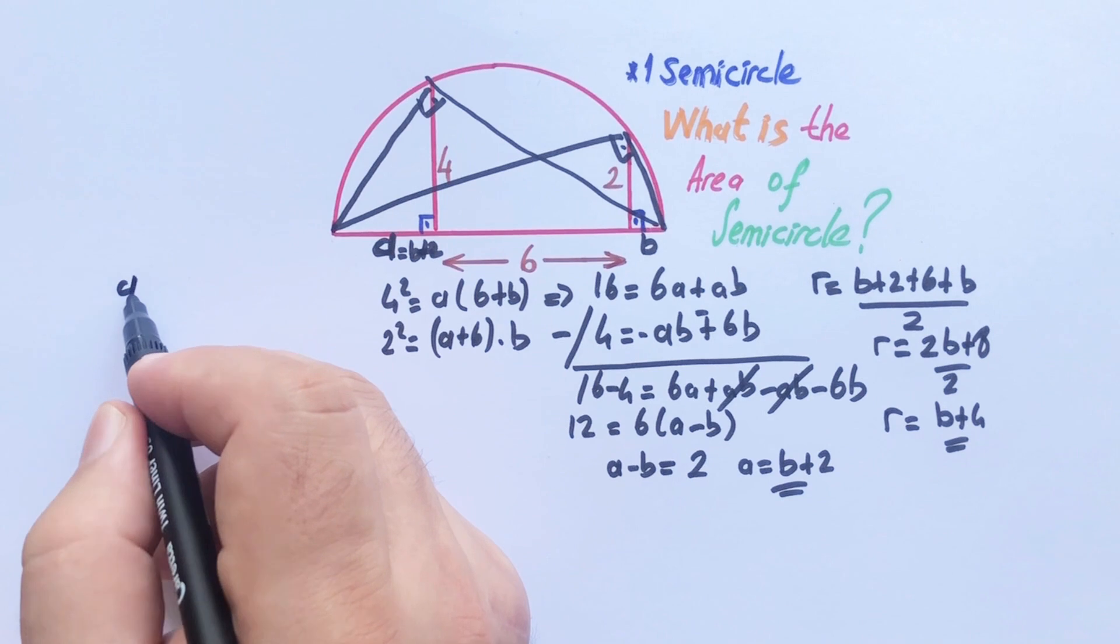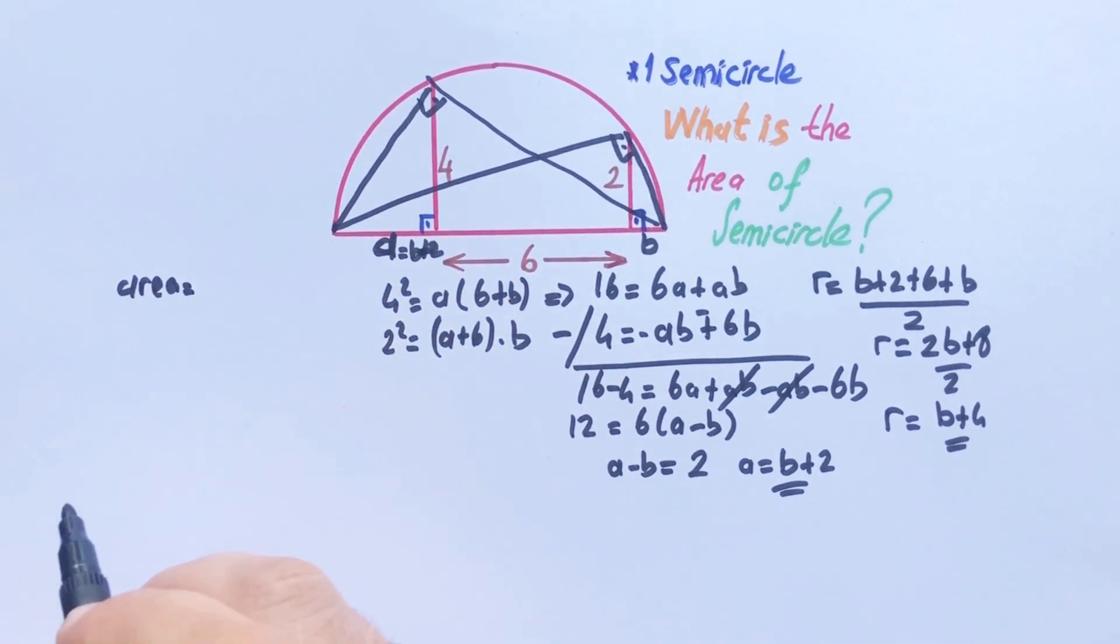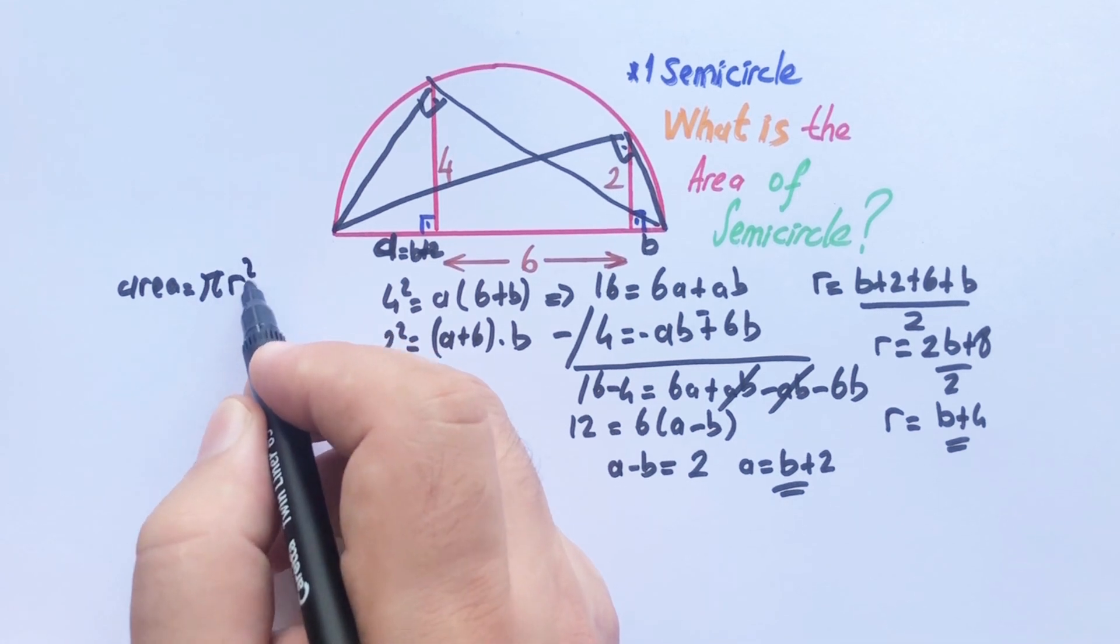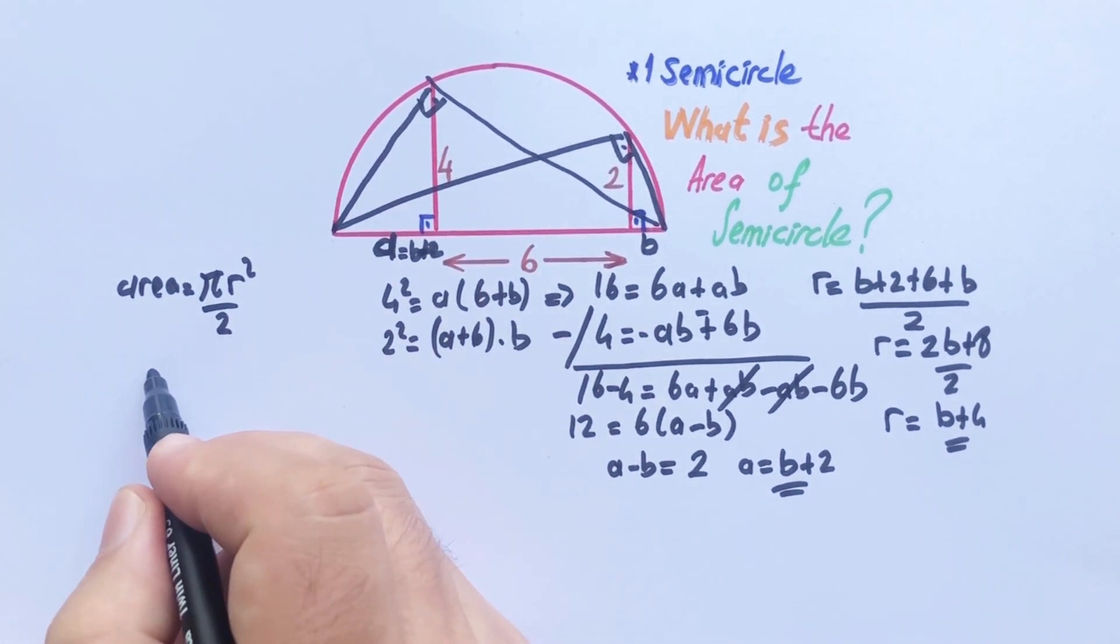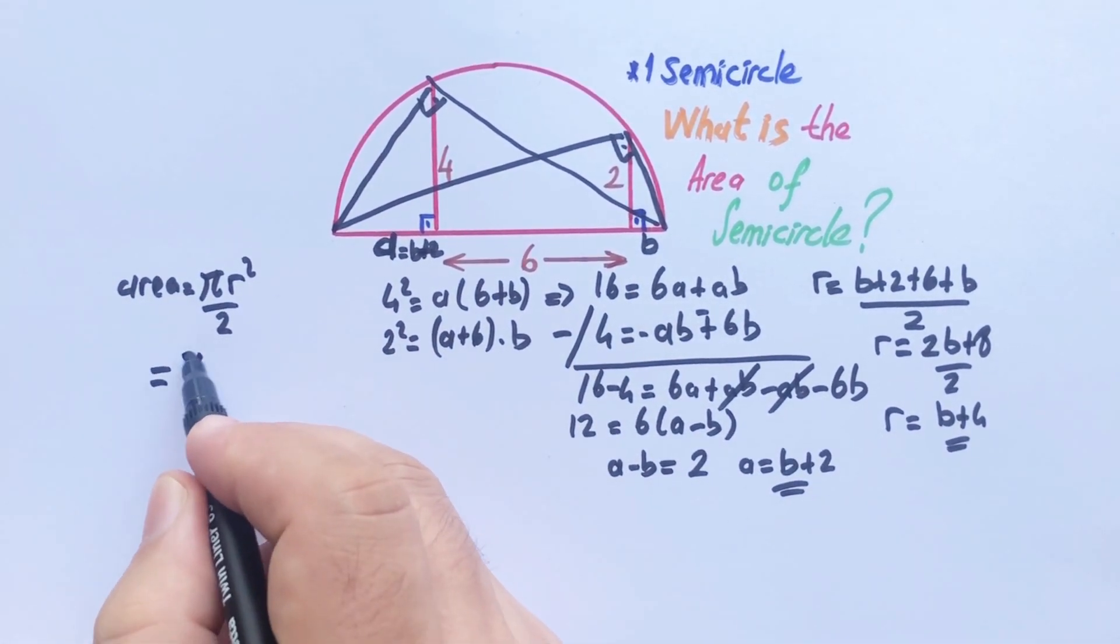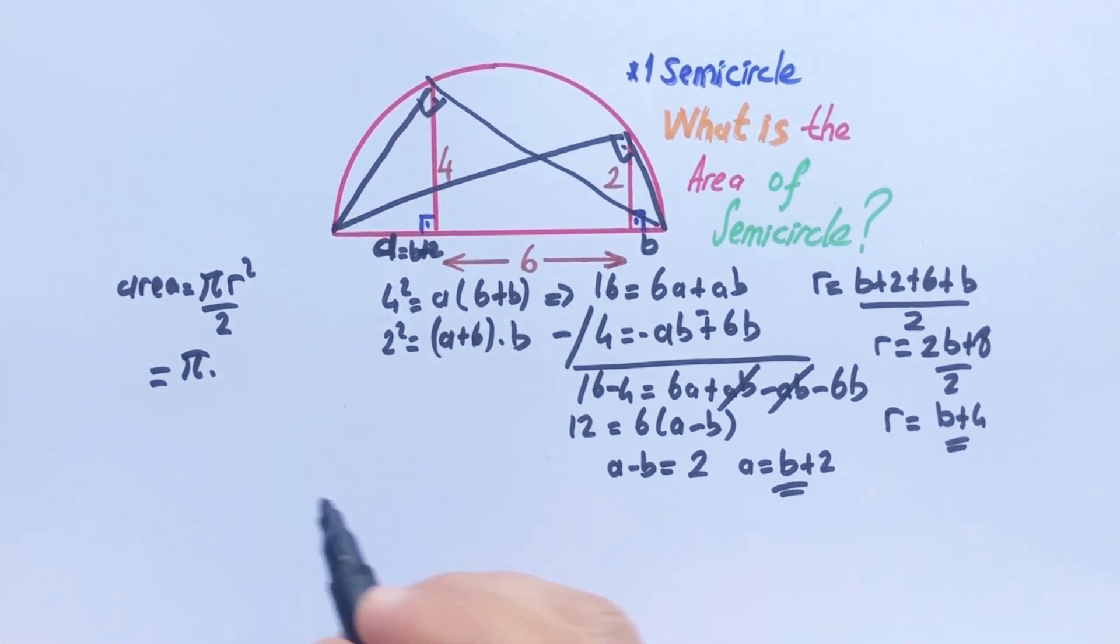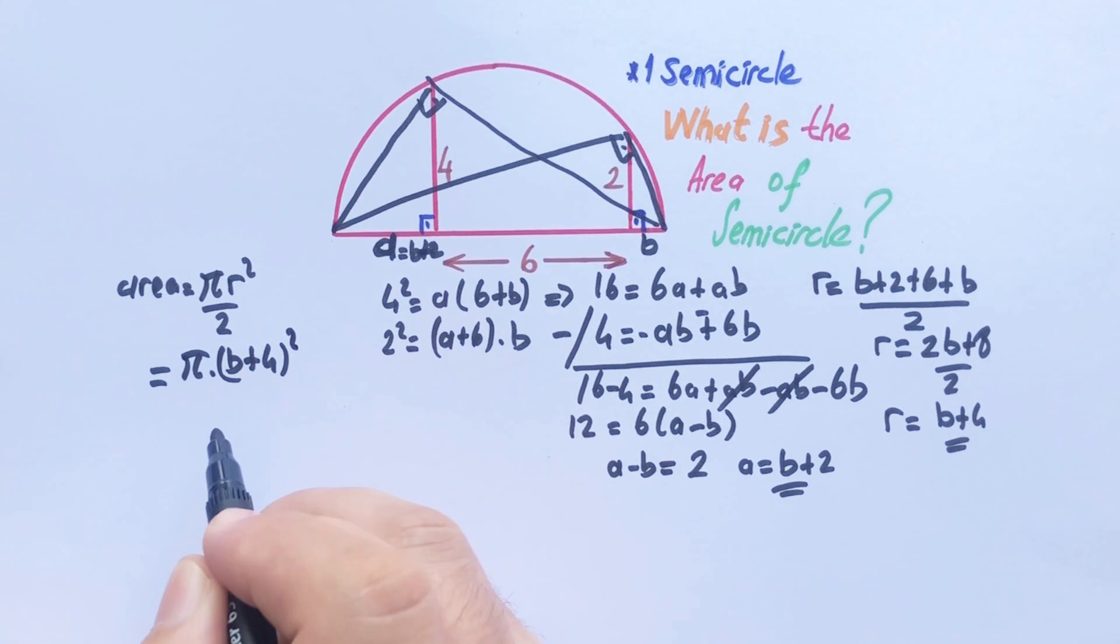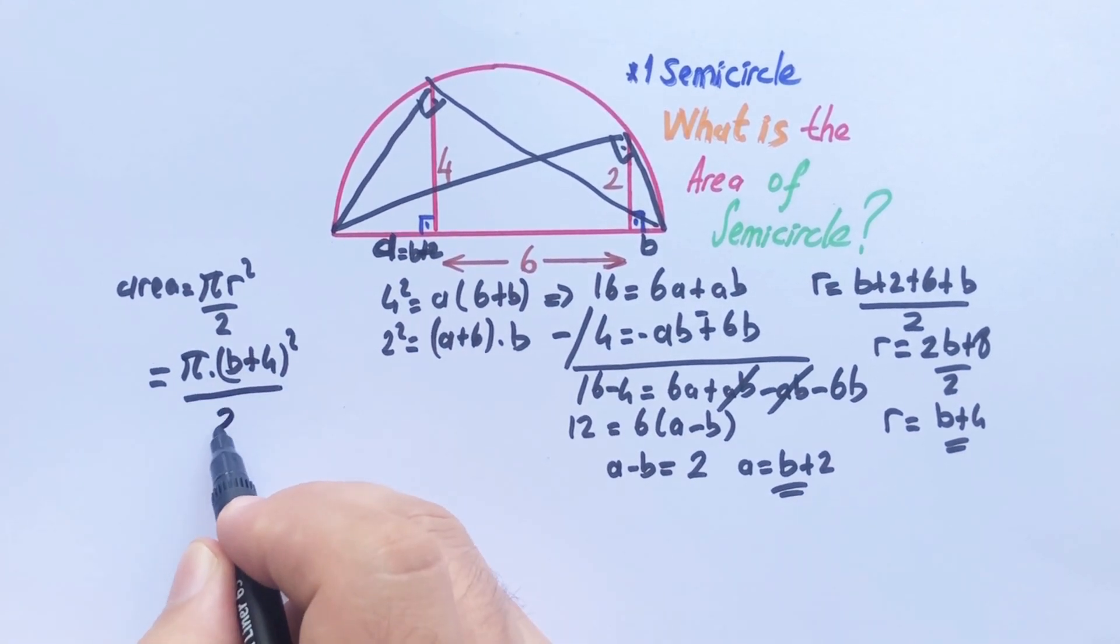The area of the semicircle is equal to pi r squared over 2. We found r is b plus 4, so pi (b plus 4) squared over 2.